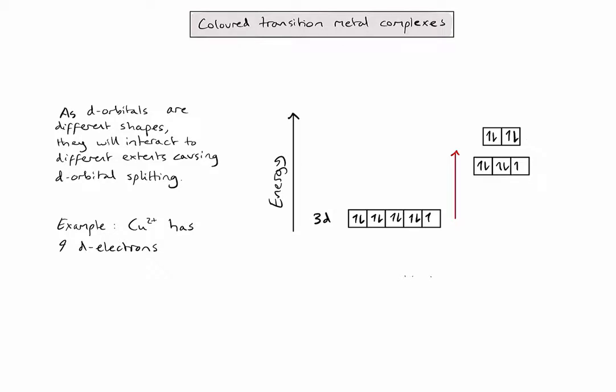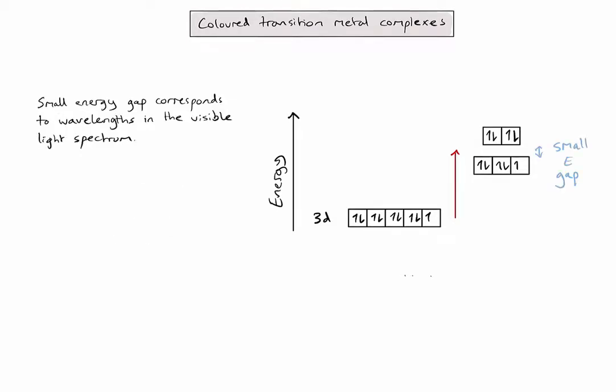As it happens, the amount of energy absorbed by an electron transition into a higher energy d-orbital corresponds to the visible light spectrum. The specific wavelength of light absorbed depends on the size of the gap, and this can be affected by a range of factors talked about in another video.